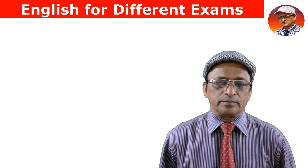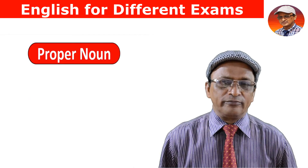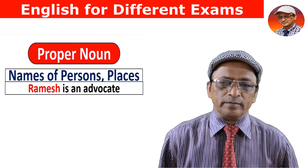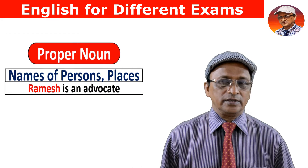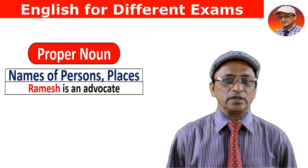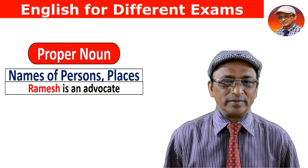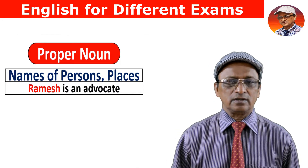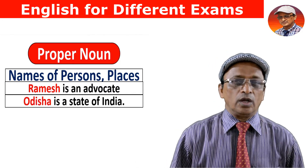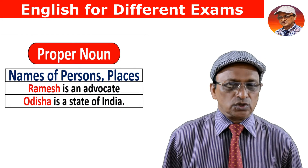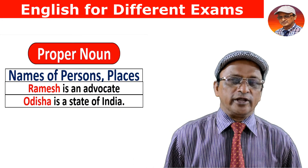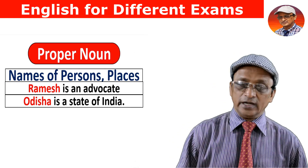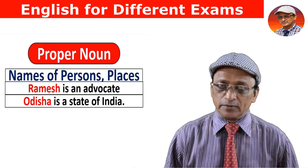Proper noun is the name of a person or a place. When I say 'Rames is an advocate,' Rames refers to a person — so Rames is a proper noun. Another example: 'Odisha is the state of India.' Odisha is the name of a place, so Odisha is a proper noun.